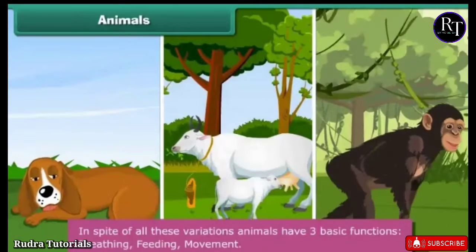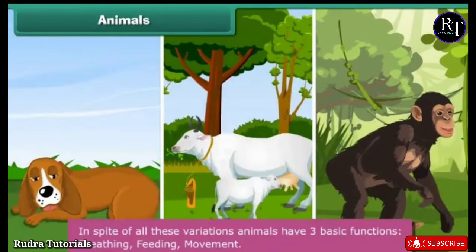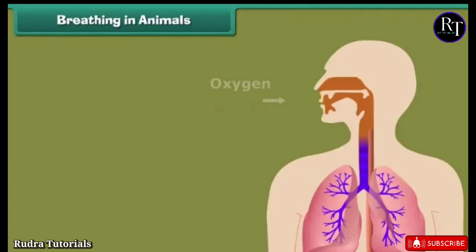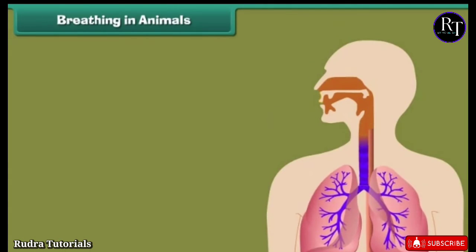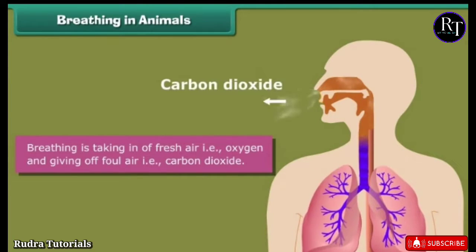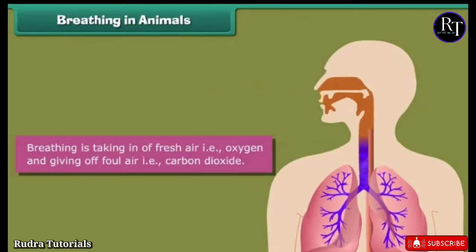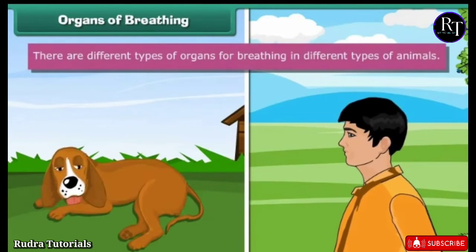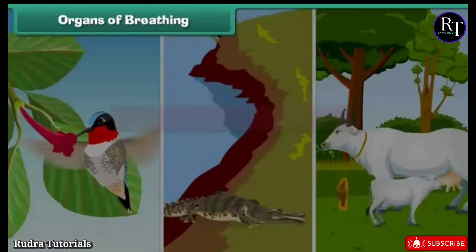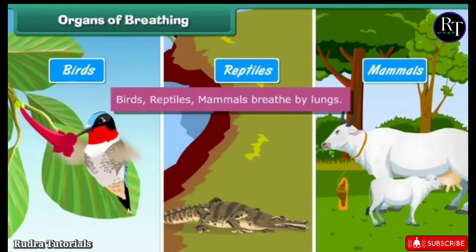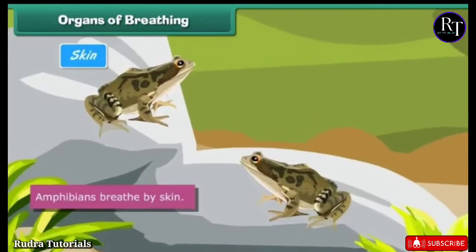In spite of all these variations, animals have three basic functions: breathing, feeding, and movement. Breathing in animals is taking in fresh air — that is oxygen — and giving off foul air — that is carbon dioxide. There are different types of organs for breathing in different types of animals. Birds, reptiles, and mammals breathe by lungs. Amphibians breathe by skin.